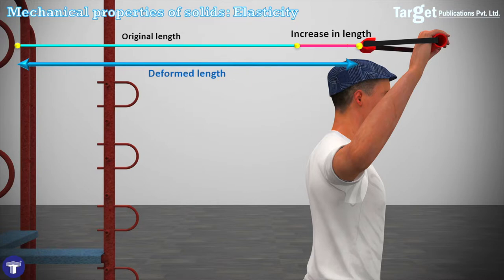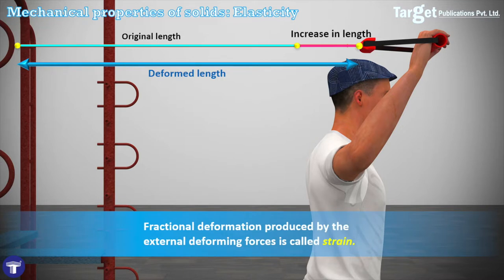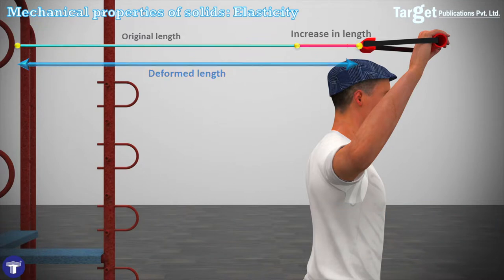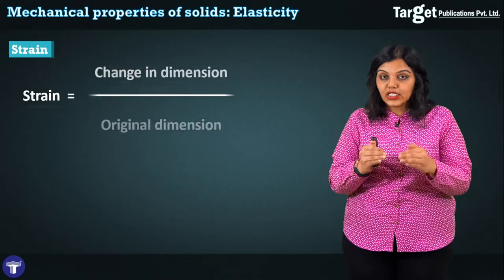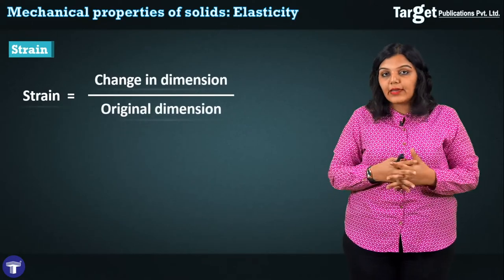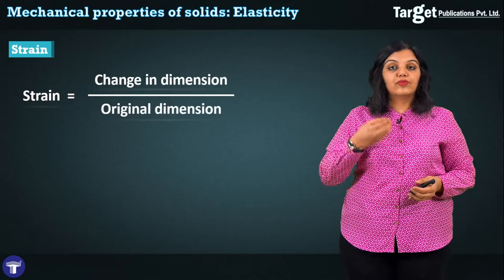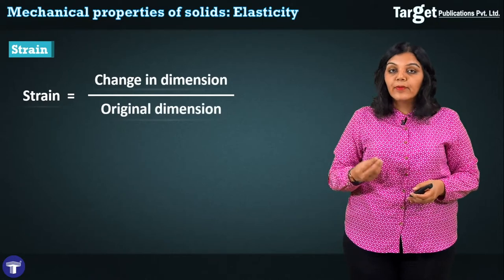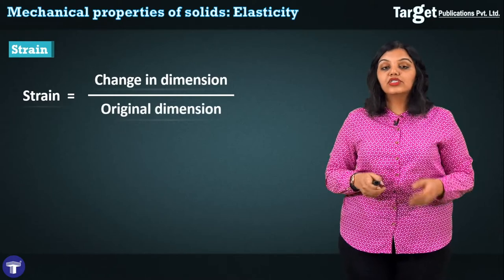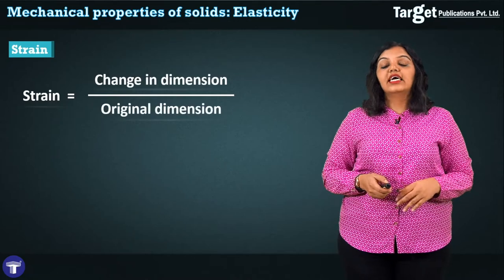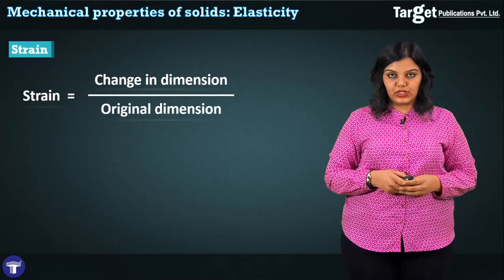By definition, strain is the fractional deformation produced by the external deforming force. The formula for strain is change in dimension divided by original dimension — where the dimension could be length, area, or volume. In general, strain equals change in dimension upon original dimension. Note that strain is a dimensionless fractional quantity.